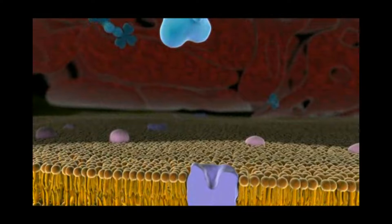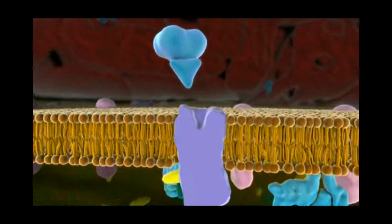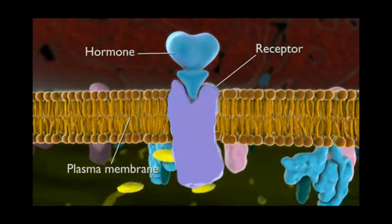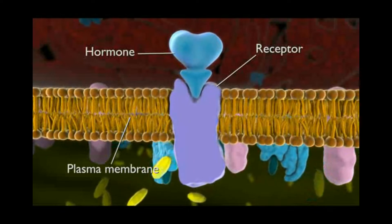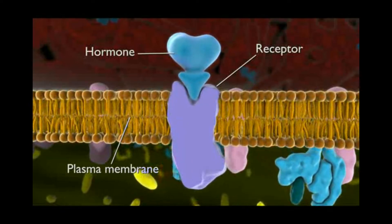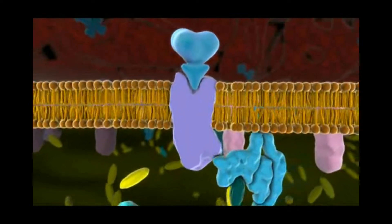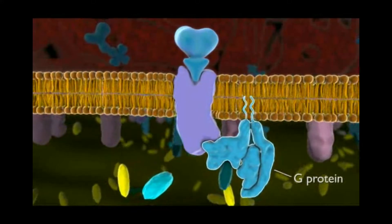A hormone molecule, acting as the first messenger, binds to its receptor, causing the receptor to change shape. The receptor can now activate specific intracellular G proteins.